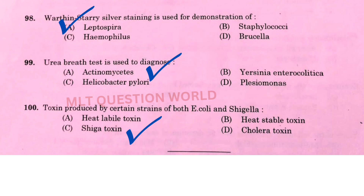Next one: Urea breath test is used to diagnose — the right answer is option C, Helicobacter pylori. The last question: Toxin produced by certain strains of both E. coli and Shigella — the right answer is option C, Shiga toxin.